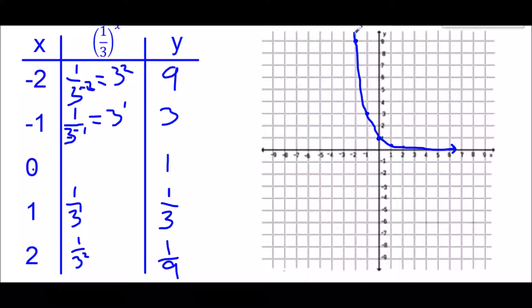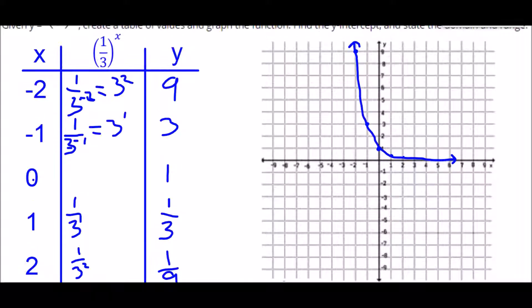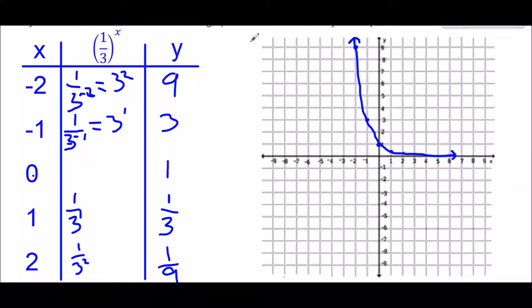Now that we have the table and the graph, we can look at where the y-intercept will be. The y-intercept is where we cross the y-axis, so it's the point 0, 1. The y-intercept, abbreviated y-int, is just the value 1.